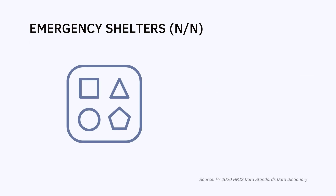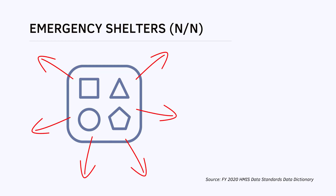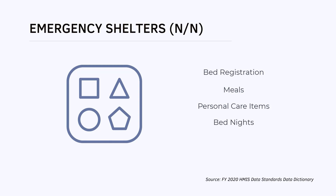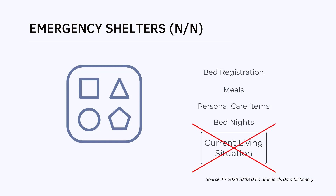For night-by-night emergency shelters, these requirements are a little different. These programs should only record current living situation when the interaction with the client goes beyond the provision of basic services. Daily sheltering activities like bed registration, meals, care items, and bed nights are considered basic services, so no current living situation is needed when providing these types of care.